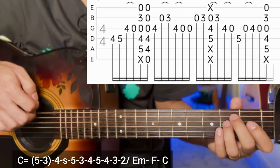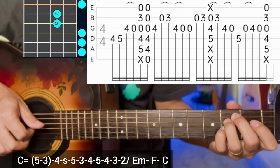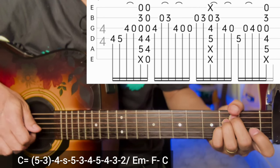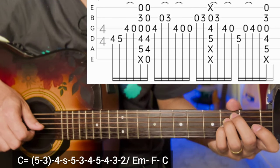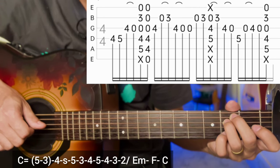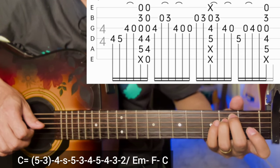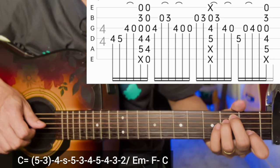For E minor, single strum the third string at 4, second string open. Hammer on the third string at 4, then pull off. Open strings, second string open, three notes on the E minor.